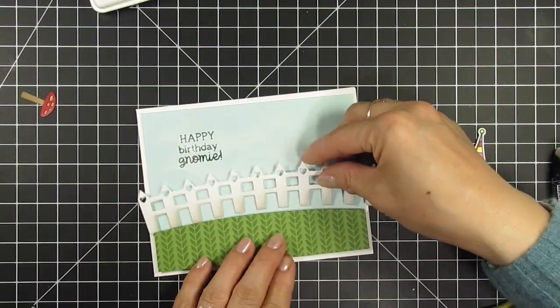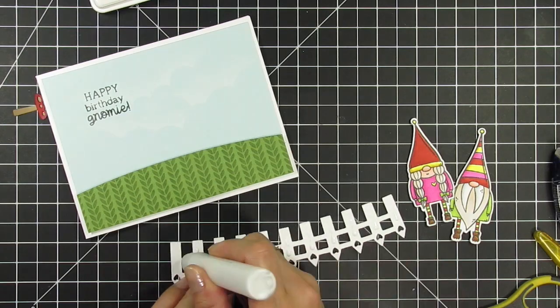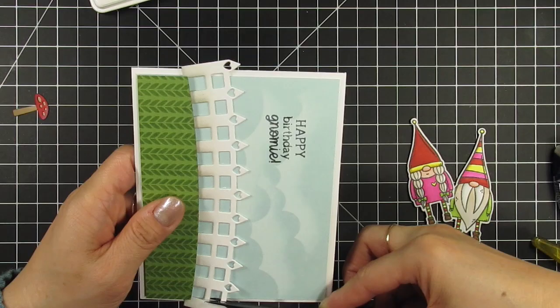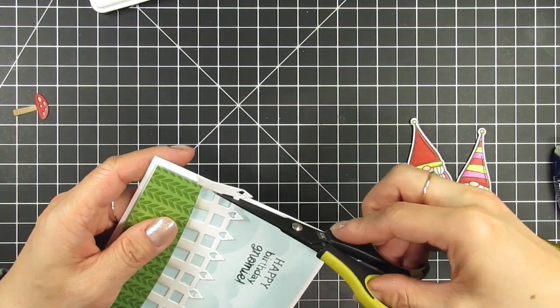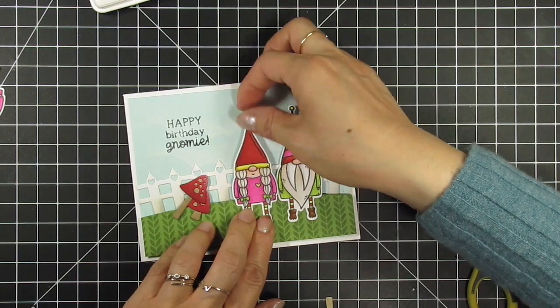I pop up the grass panel with foam tape. Then I use liquid glue to attach the fence, trimming off the overhanging bits. I should have actually done this step before adhering that panel to the card base.